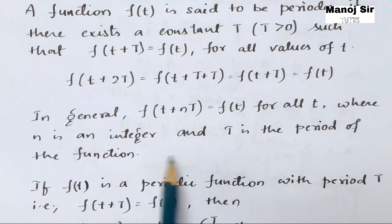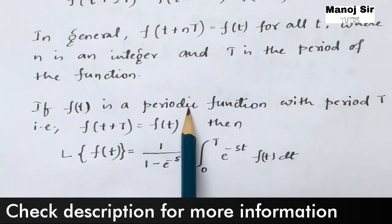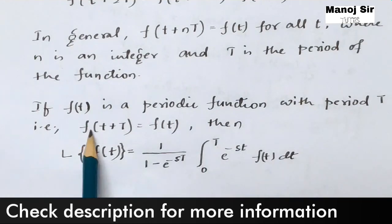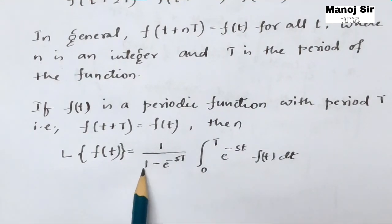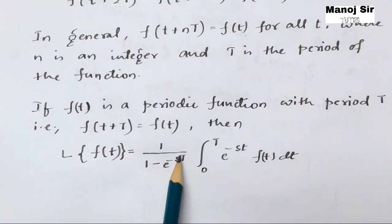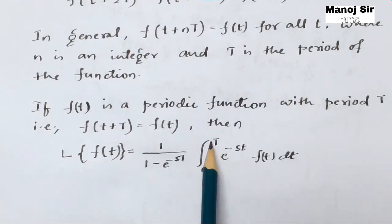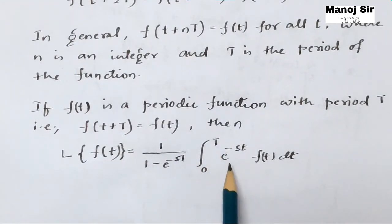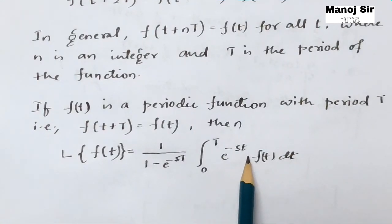If f(t) is a periodic function with period T — that is, f(t + T) equals f(t) — then this is the very important formula: the Laplace transform of f(t) equals one over (1 minus e to the power minus sT), multiplied by the integral from zero to T of e to the power minus st times f(t) dt.